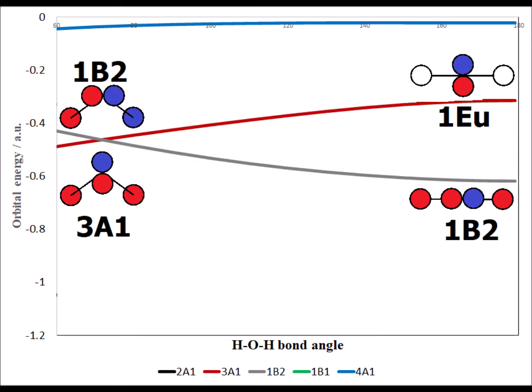Here we notice that the energies of two orbitals, 3A1 and 1B2, cross over each other at a bond angle of about 100 degrees. The energy of 1B2 drops as the molecule becomes more linear, going to the right on the graph, and 3A1 increases. Note too that the symmetry label for 3A1 changes to 1EU when the molecule becomes linear.